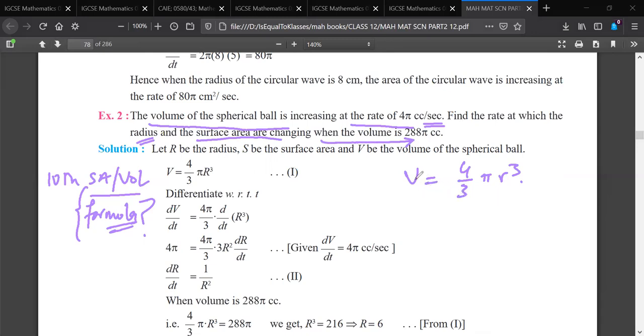So what is the formulae saying? Derivation. Derivation means dV/dt. 4 by 3 π, it will be constant. It will not do anything else. It will get out of it. And you have to remove the derivative of r³.